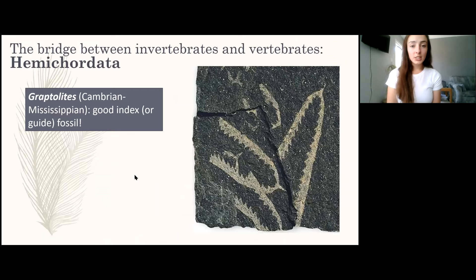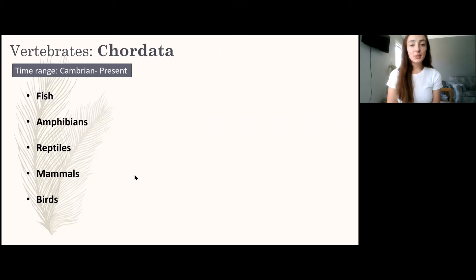Before vertebrates, graptolites bridge the gap — they are in the phylum Hemichordata and were around from the Cambrian into the Mississippian, also making excellent index fossils.